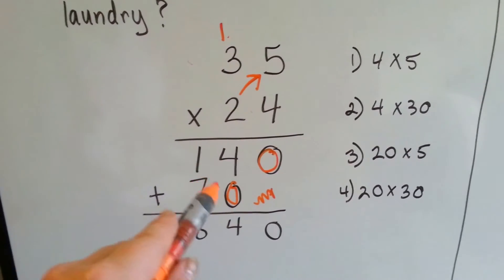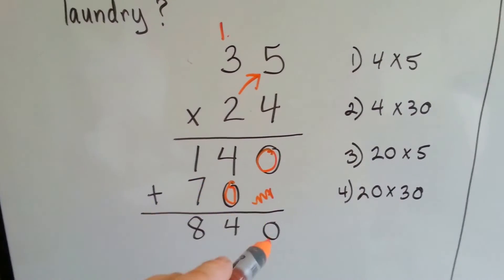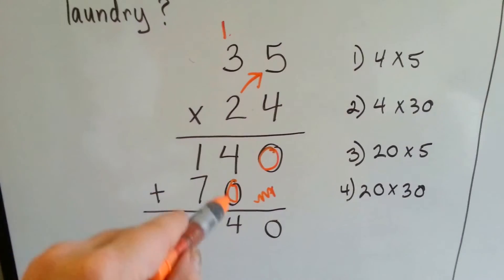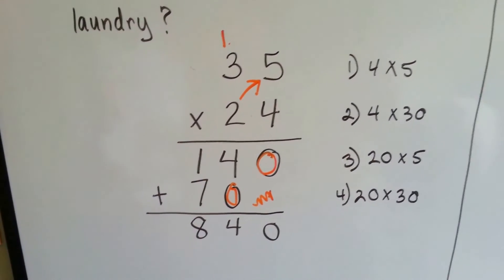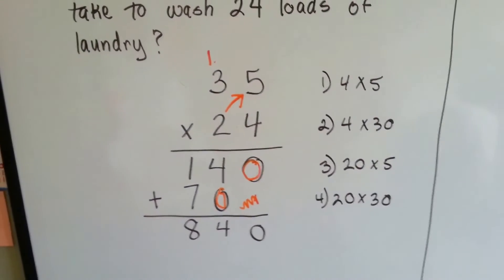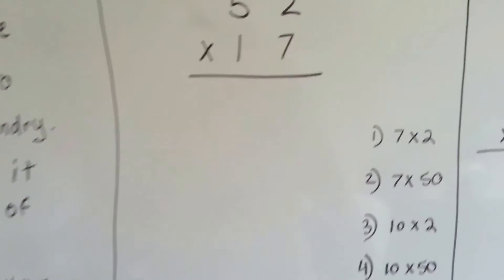Now, once we've got these, we add them up. 0 drops down, 4 and 0 is 4, and 1 and 7 is 8, and 35 times 24 is 840. So let's try this again real quick.